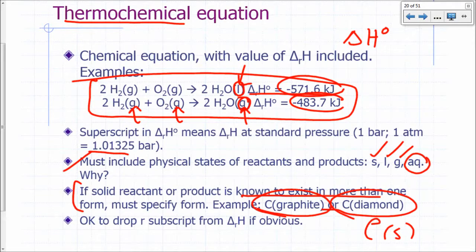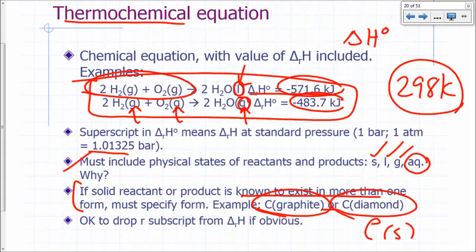At one atmosphere, at one bar pressure, and unless otherwise specified, we're looking at temperature of 298 Kelvin. So unless otherwise specified, we're imagining that we start off with reactants at 298 Kelvin and end up with products at 298 Kelvin.